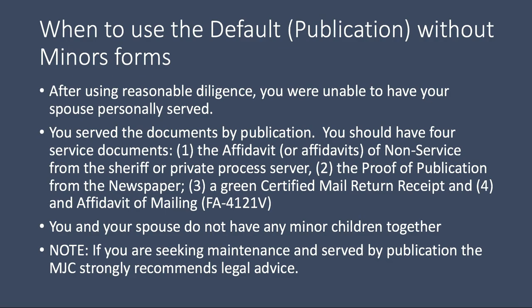If you went forward by publication, you will need to have four service documents. You'll need to have the affidavit of non-service — or if you tried multiple times at multiple addresses or multiple ways, you'll want affidavits of non-service from the sheriff, private process server, or both if you tried both. You'll also need the proof of publication from the newspaper that you published in. You'll need the little square green certified mail return receipt, because you should have sent the paperwork by certified mail to the last known address. And you'll also need an affidavit of mailing — that particular affidavit of mailing is form FA-4121B.